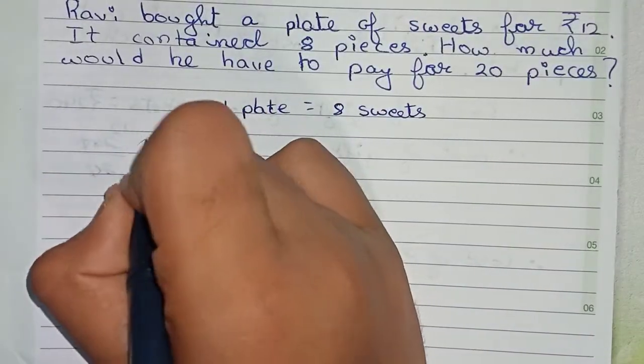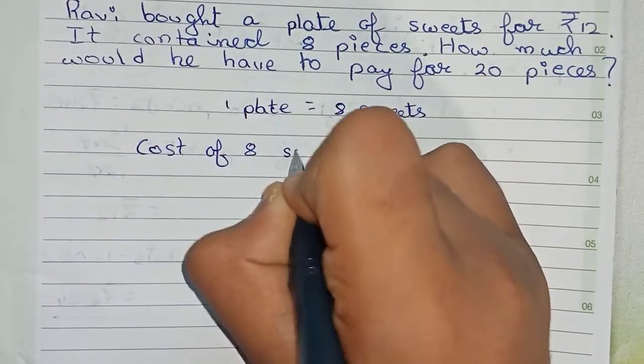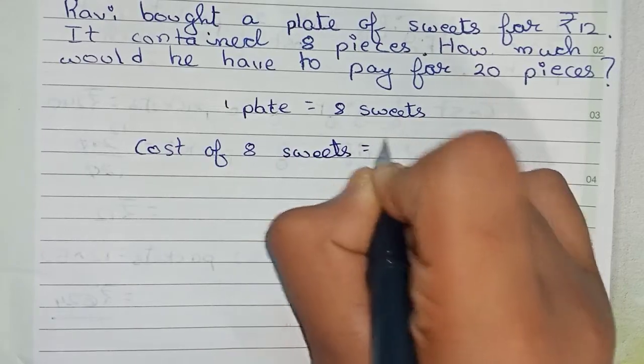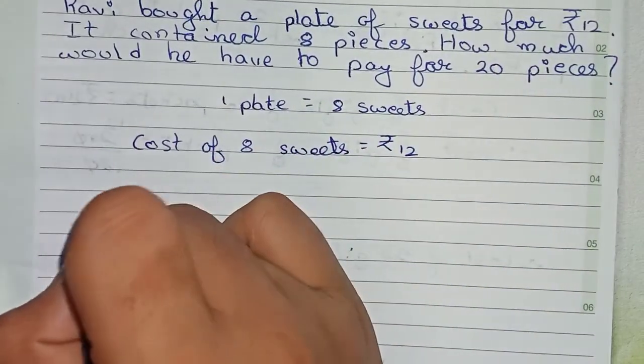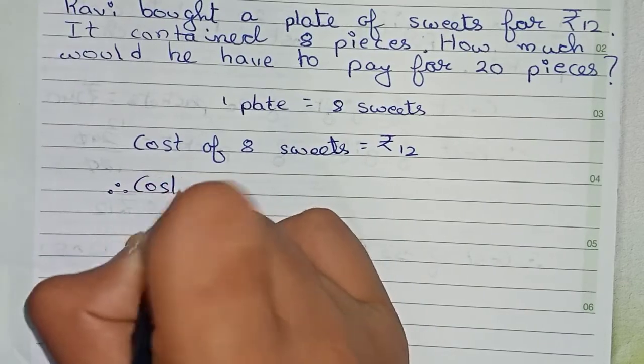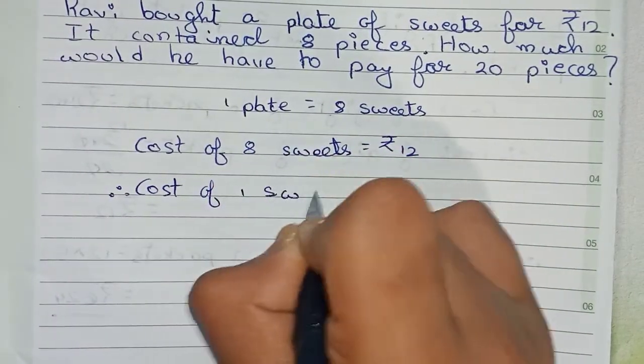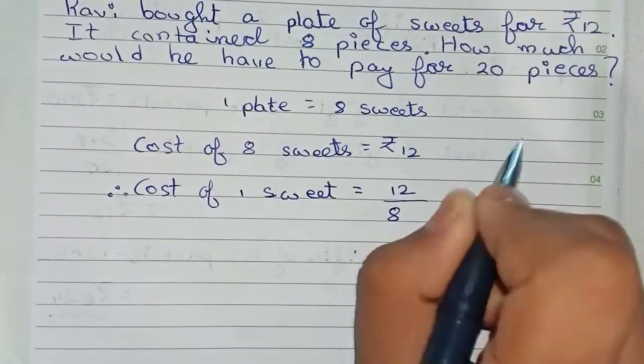The cost of 8 sweets is given as rupees 12. So now I write the cost of 1 sweet. Therefore, the cost of 1 sweet equals 12 by 8. So keep it like this only.